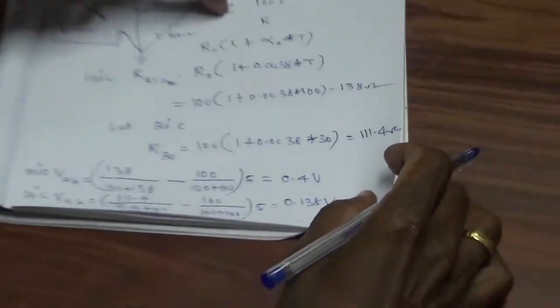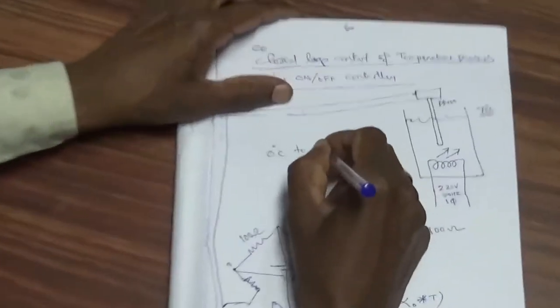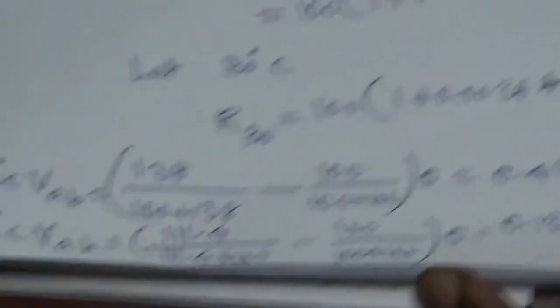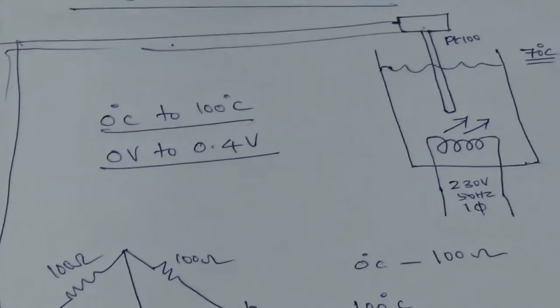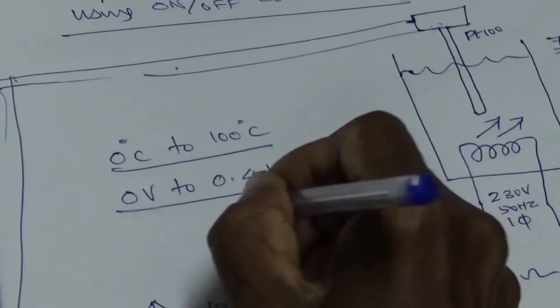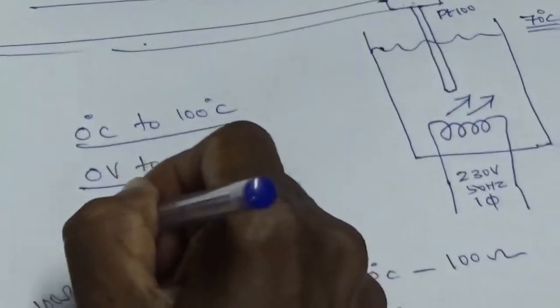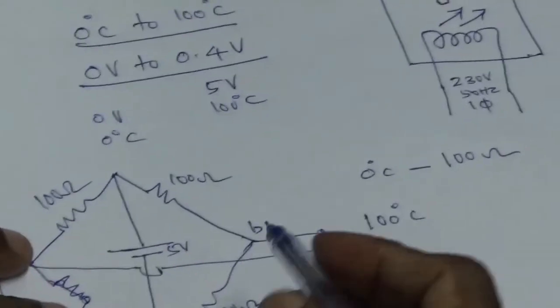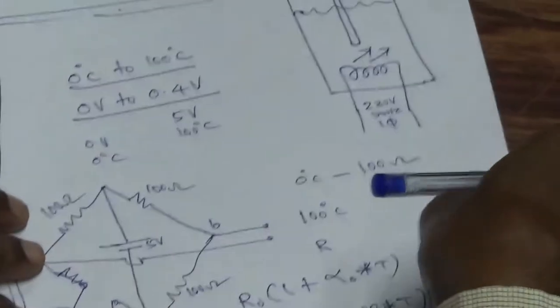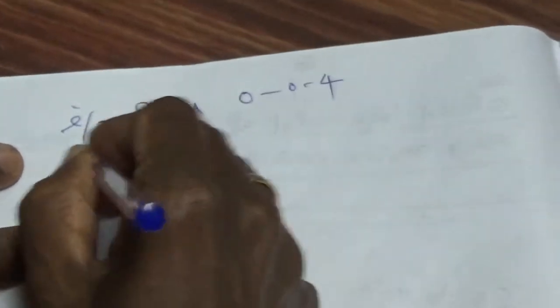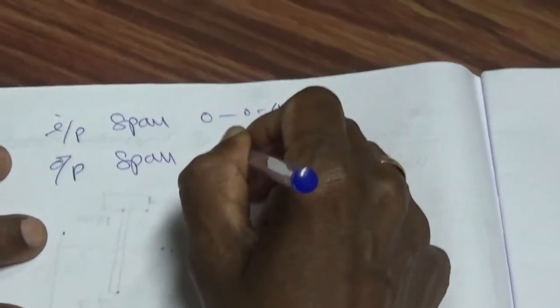Let us design a transmitter for the range of 0 to 100 degrees centigrade. At 0 degrees centigrade the output of the bridge is 0 volts, therefore the bridge output varies from 0 volt to 0.4 volt. Let us design a transmitter which will give 5 volts corresponding to 100 degrees centigrade and 0 volts corresponding to 0 degrees centigrade. The input span is 0 to 0.4 volts and the output span is 0 to 5 volts.